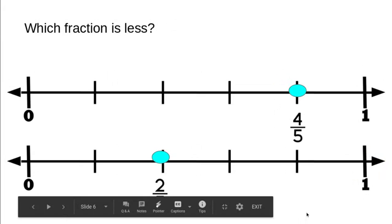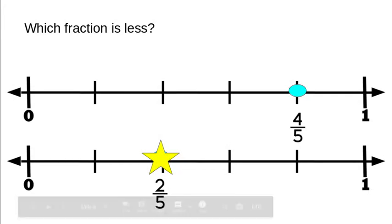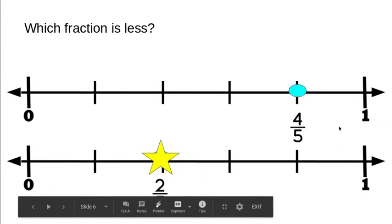This one wants to know which fraction is less. These two number lines are broken up into the same increments — both into fifths. The first number line shows four fifths, which is almost a whole; one more fifth and it would be five fifths. Then we have two fifths. Do you think four fifths is less, or two fifths is less? If you said two fifths, you are correct, because two fifths is closer to the zero and four fifths is obviously closer to the whole.